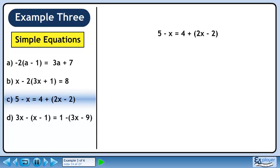Now we'll solve the equation in part c. We write the equation as 5 minus x equals 4 plus 2x minus 2. Simplify to 5 minus x equals 2x plus 2.